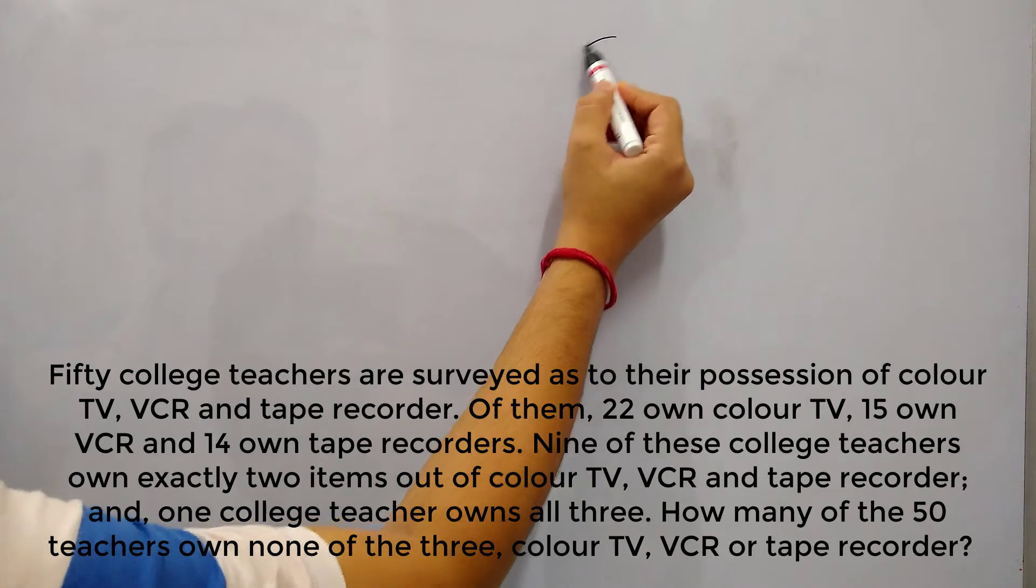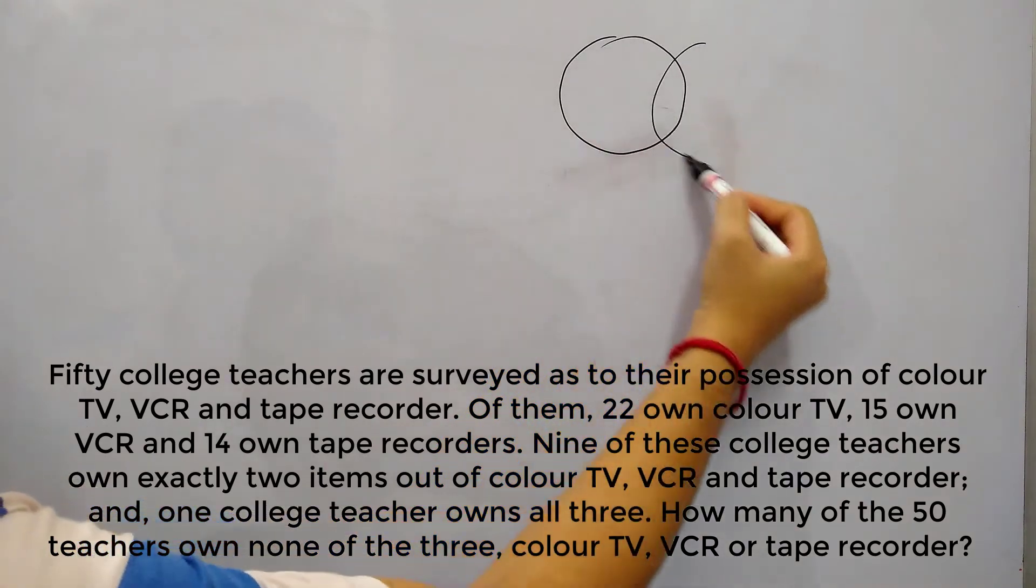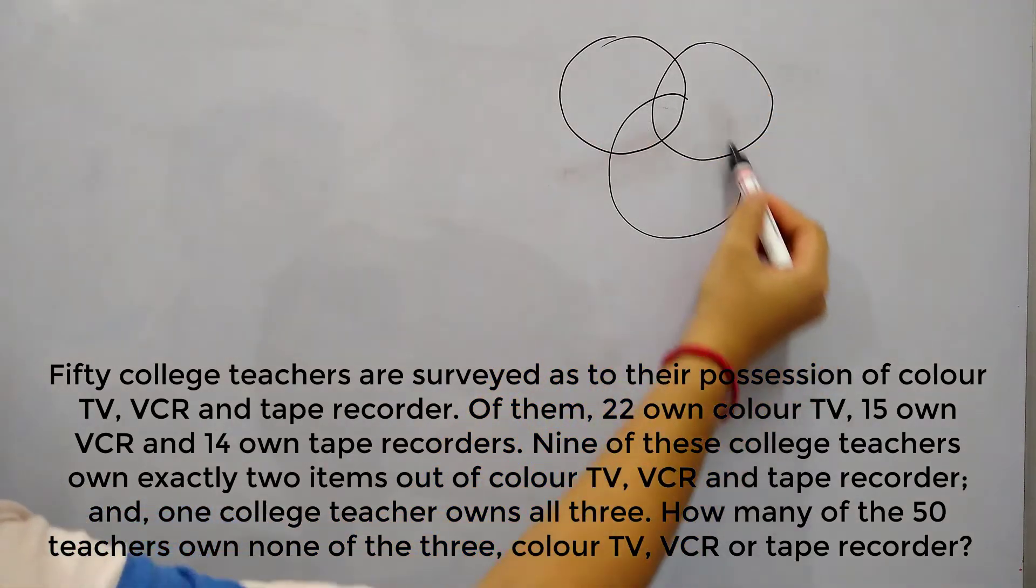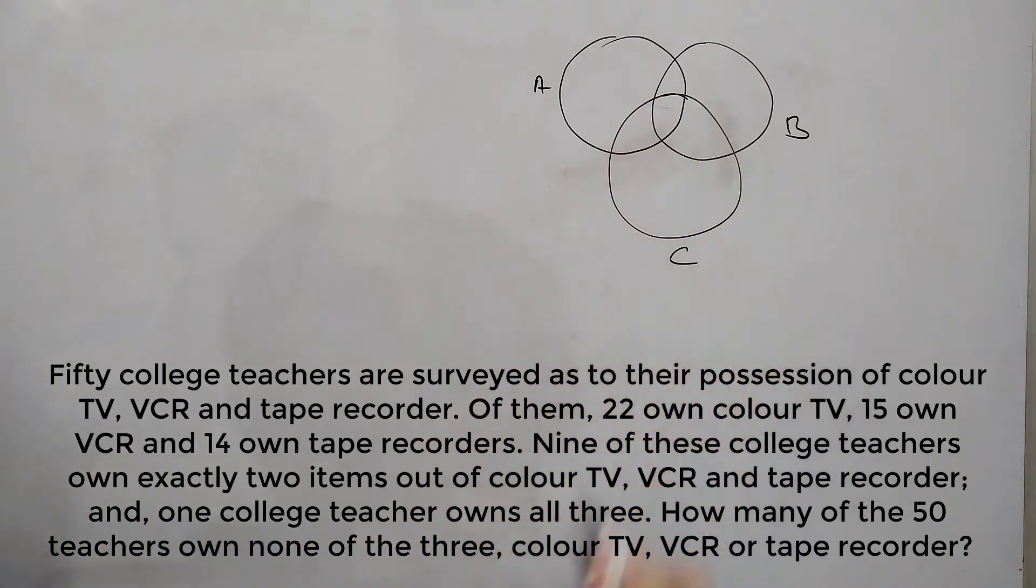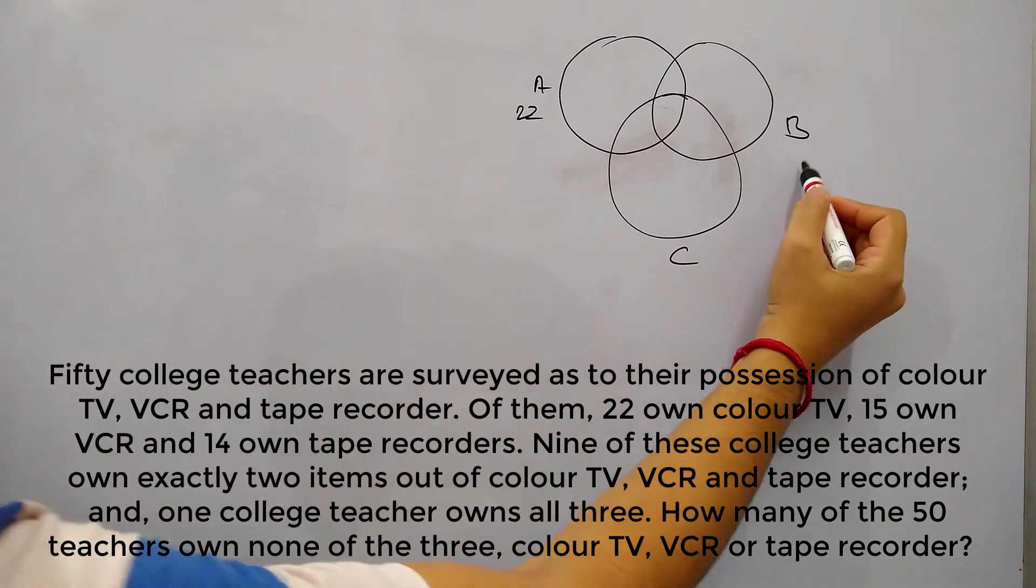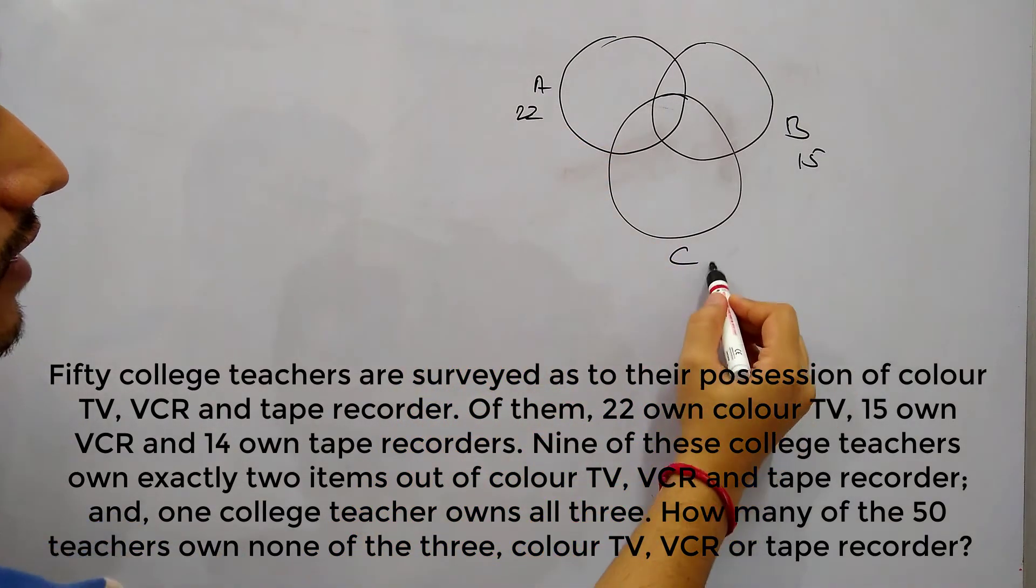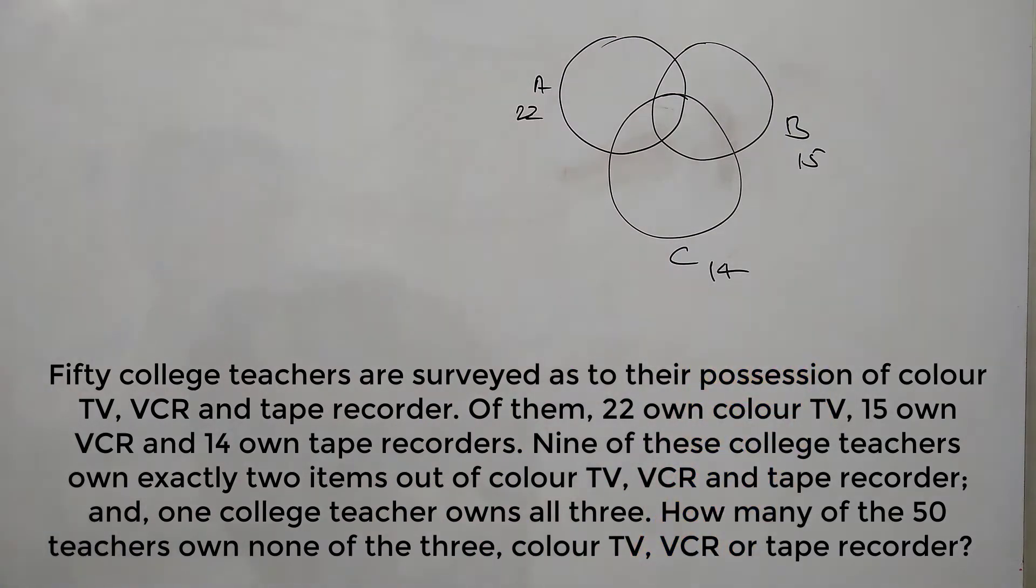So let's name them A, B and C. So this is A, B and C. A is 22, B is 15 and C is 14. And those who own exactly 2 items, the sum is given as 9.